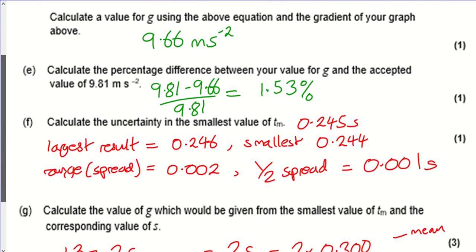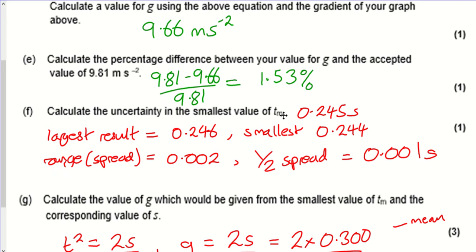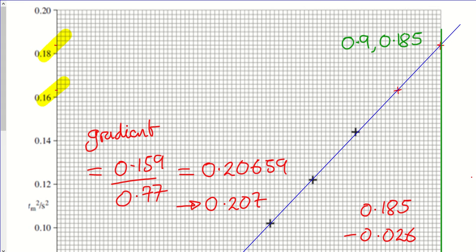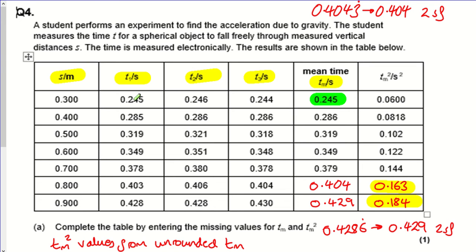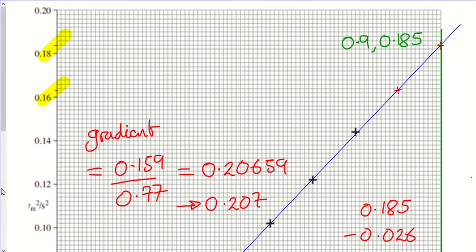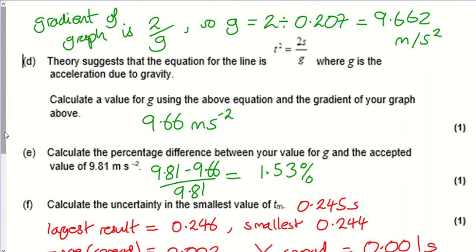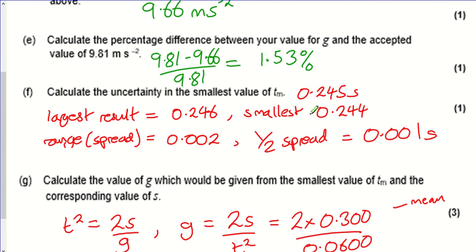Next, calculate the uncertainty in the smallest mean time value. Their smallest mean time is 0.245 s from three readings: the largest is 0.246 and the smallest is 0.244. The spread (range) is 0.002 s, and the uncertainty is half the spread: ±0.001 s.